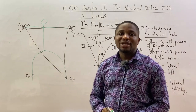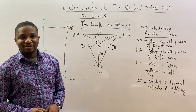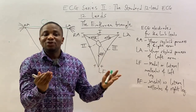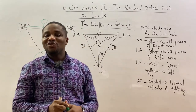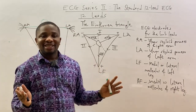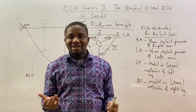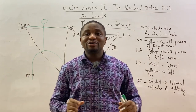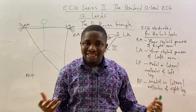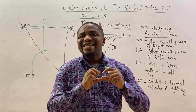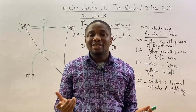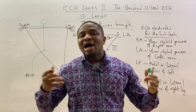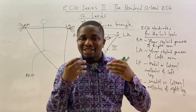In the Einthoven Triangle, the right arm electrode, left arm electrode, and left foot electrode are the three points. The right foot does not play an important role here. Here is a key principle: just as a ground wire conducts leaked electrons into the earth — a reservoir of positive charges — the left foot electrode is always positive.